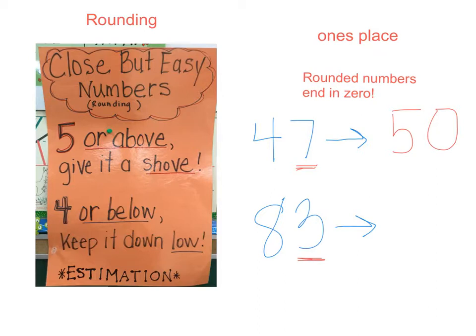Because three is four or below, it's less than four, we round it down. The number that comes before eighty-three that ends in zero is eighty.